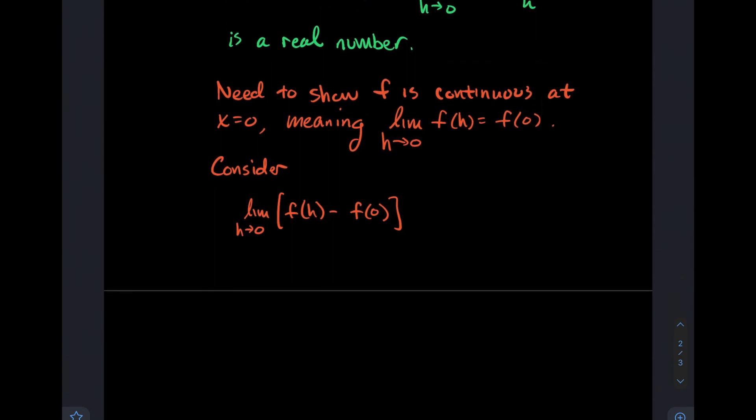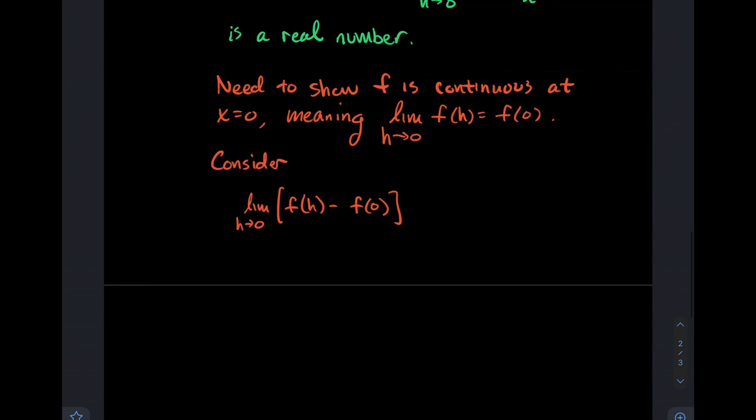If we consider this limit of f(h) minus f(0), what we're going to do is a mathematician's favorite trick, or at least one of them anyway, which is to multiply and divide by the same number h. Maybe you're worried here, like, well, how do you know h isn't 0? Because if h was 0, that'd be terrible, because you're dividing by 0.